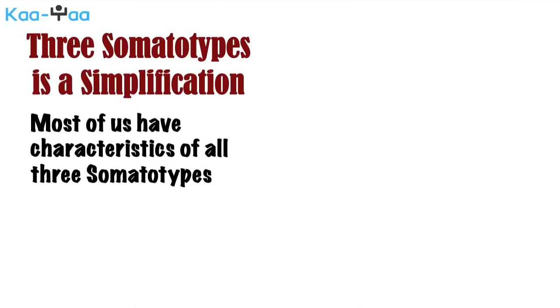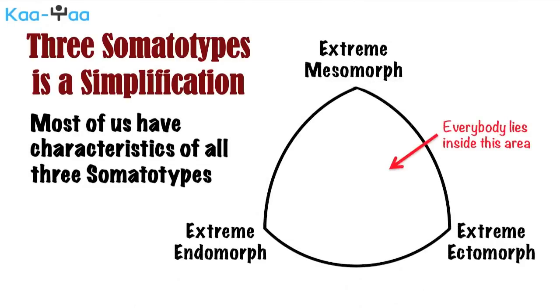A better way of visualizing body types is to draw a triangle with its three ends being the extremes of these somatotypes and all others lying somewhere within it.